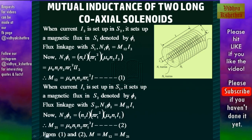Into mu0*n2*i2 which is the magnetic field of the solenoid. Therefore we can write M12 = mu0 * n1 * n2 * pi * r1² * l. Now when current i1 is set up in S1, the smaller inner solenoid, it sets up a magnetic flux in S2 denoted by phi2, and we can write the flux linkage with S2: N2*phi2 = M21 * i1. Since in this case the majority of the flux is in the smaller coil itself of radius r1, we can write N2*phi2 = n2 * l * pi * r1² * mu0 * n1 * i1. Therefore M21 = mu0 * n1 * n2 * pi * r1² * l. So from these two results we can see that M12 = M21.